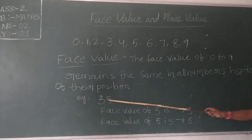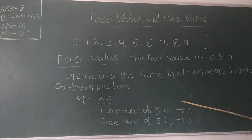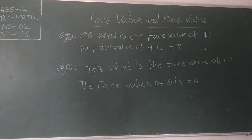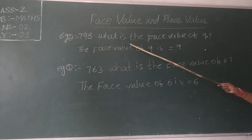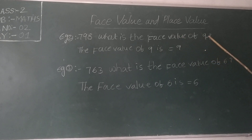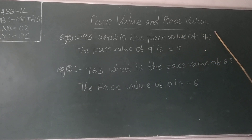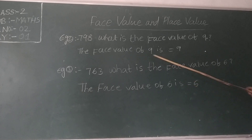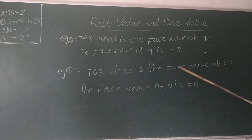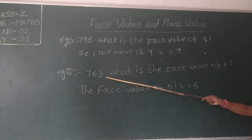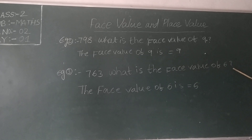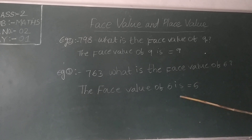The face value of 3 means the face value of 3 is 3. Students, see another example: 798. In 798, what is the face value of 9? You already know face value means the digit itself only. So the face value of 9 is 9. What is the face value of 8 in 798? The face value of 8 is 8 only.